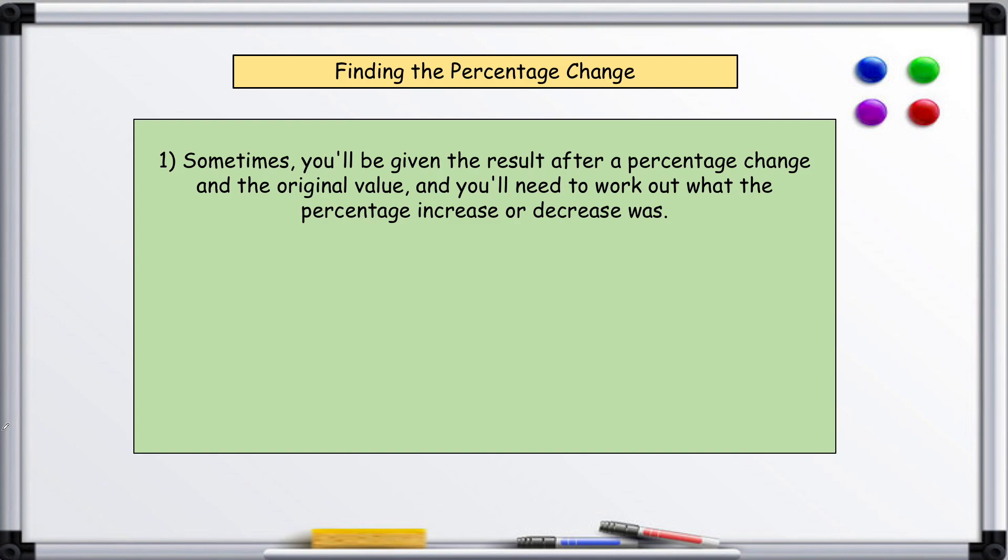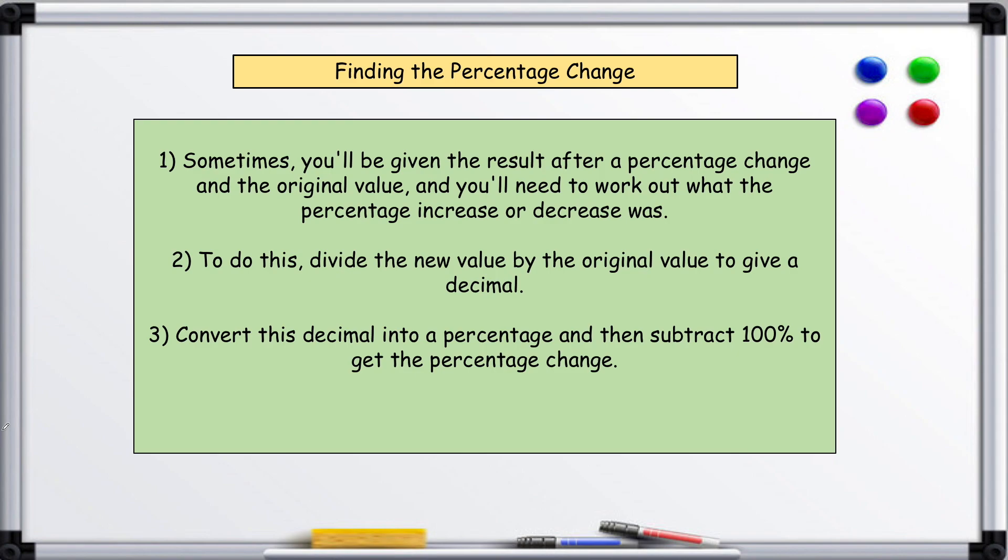To do this, divide the new value by the original value to give a decimal. Convert this decimal into a percentage by multiplying by 100, and then subtract 100 to get the percentage change.